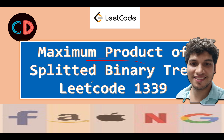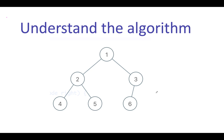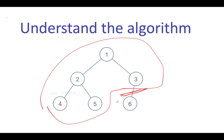LeetCode 1339 - Maximum Product of Splitted Binary Tree. Let's take the example from the question: a binary tree with nodes 1, 2, 3, 4, 5, 6. If we make a split at one particular edge, one half of the tree has a sum of 6, and the other half sums to 1+3=4, 4+2=6, 6+4=10, 10+5=15. So the product is 15 x 6 = 90. One possibility is 90.